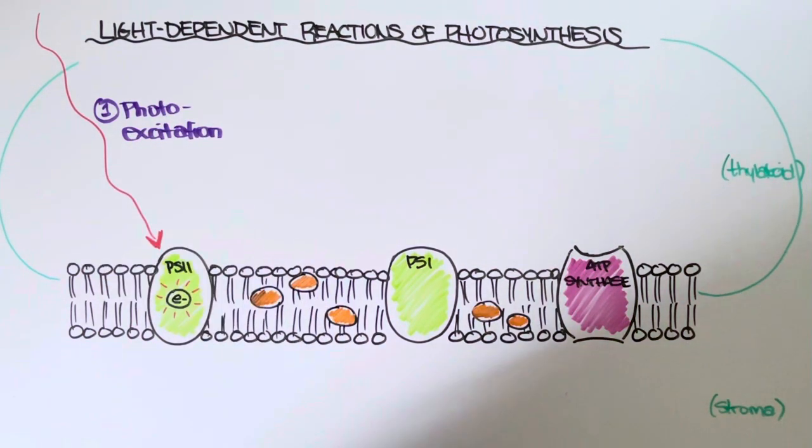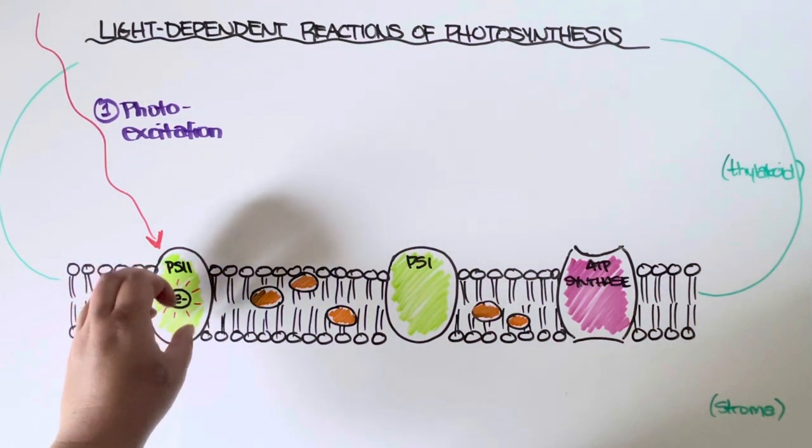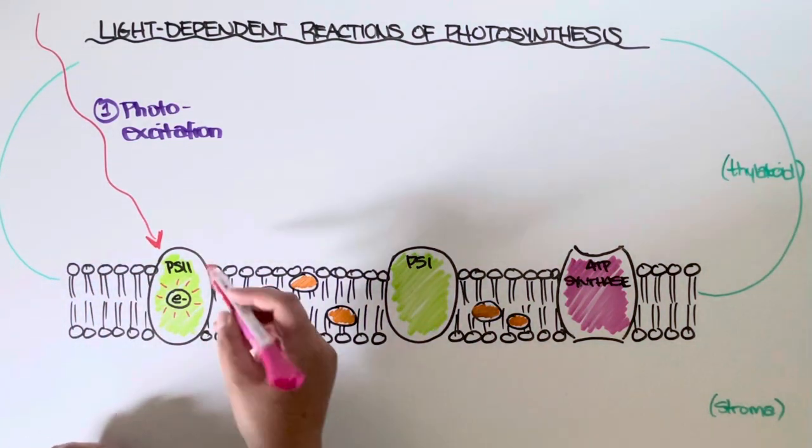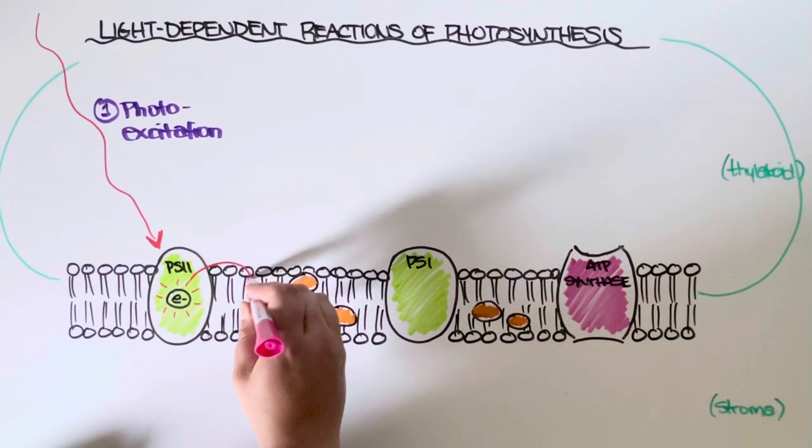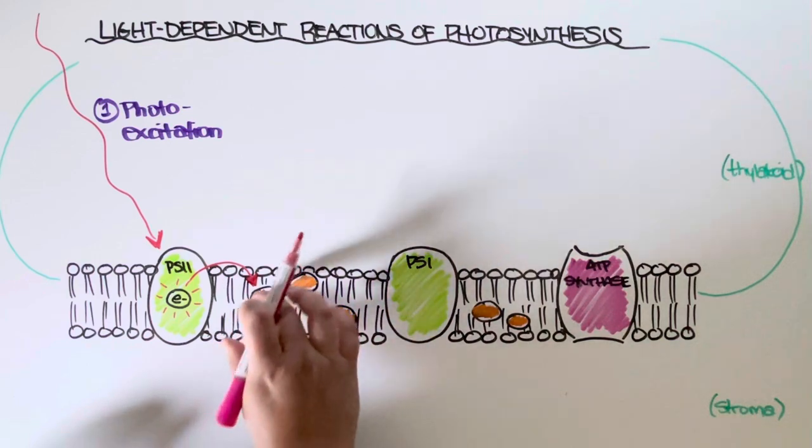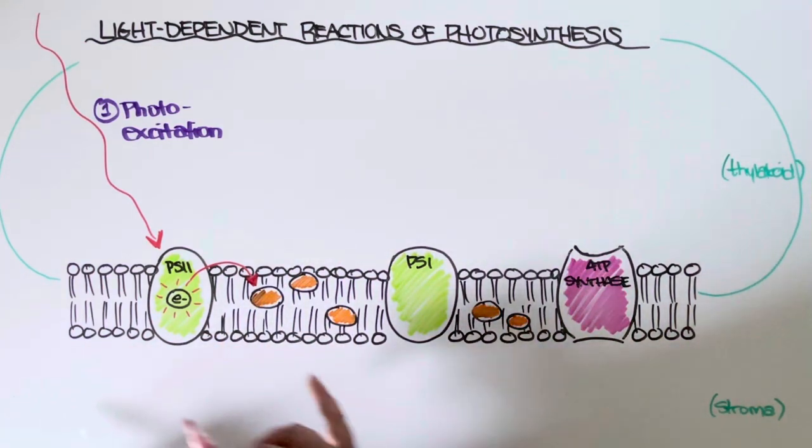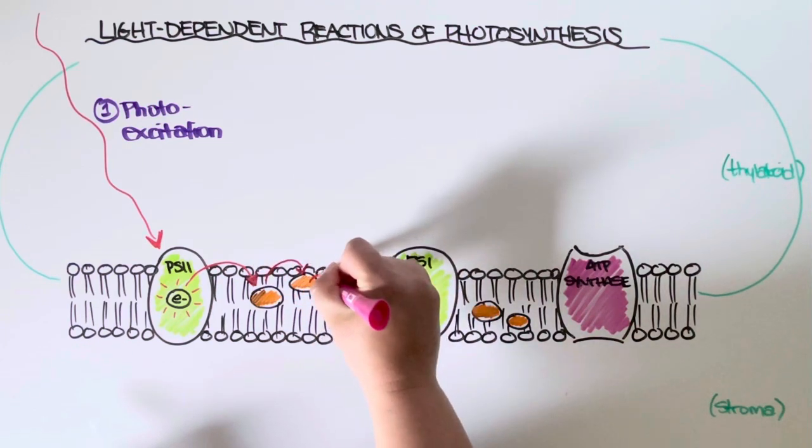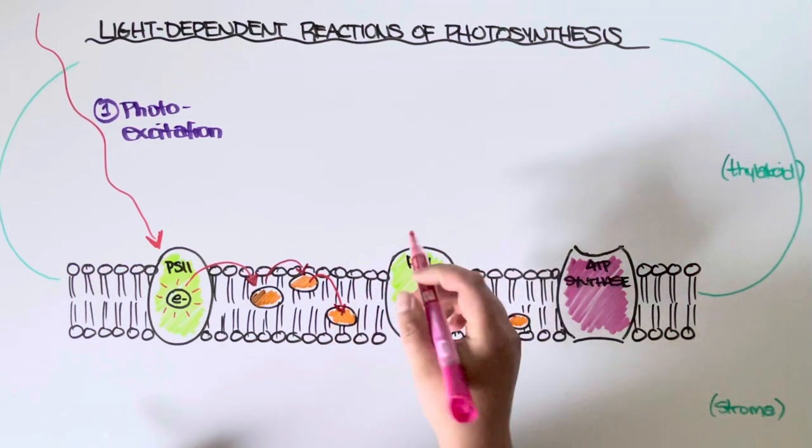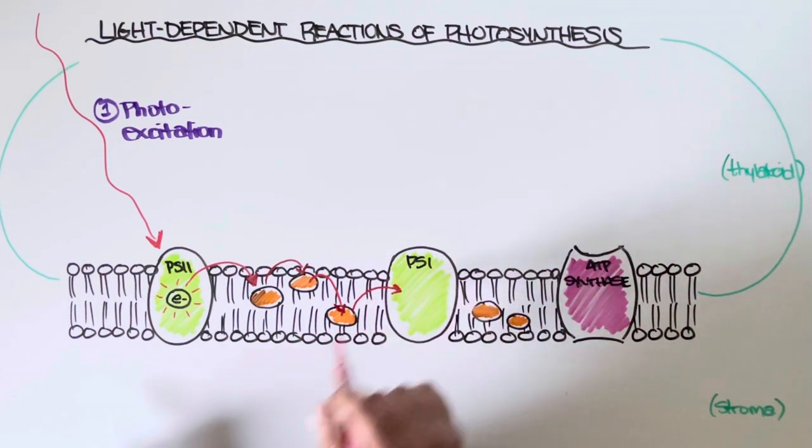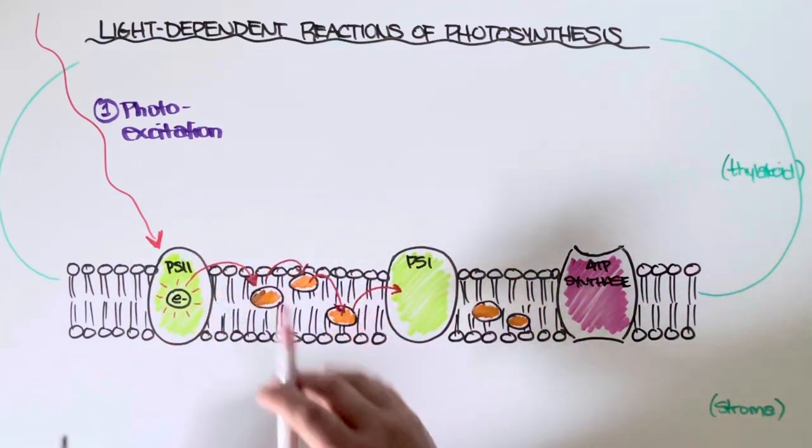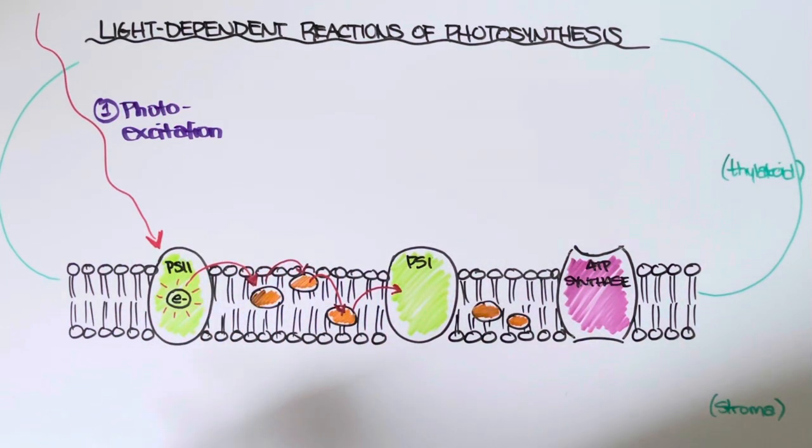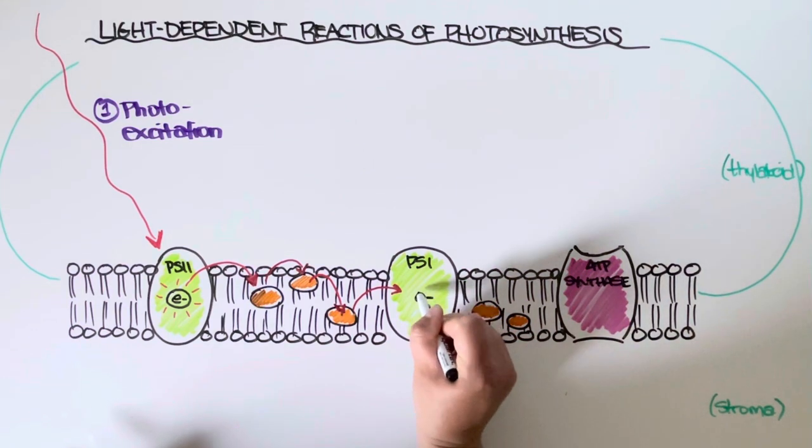So photoexcitation strikes an electron in the reaction center of PS2. That electron now becomes energized, which means it can't just stay in that protein. What it does instead is it will then be passed along to other proteins, which can use its energy to facilitate additional chemical reactions. Now, each of these proteins have specific names and you can learn in way more detail about the reactions that take place here. For our purposes, all we really need to understand is that as that electron gets passed from protein to protein, it will eventually make its way into photosystem 1.